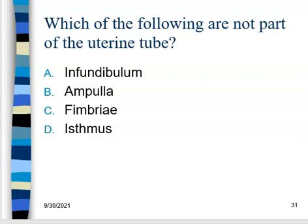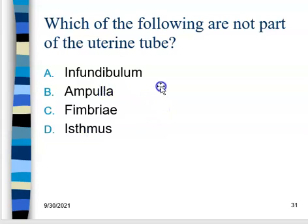Review question: which of the following is not part of the uterine tube? Going out from the uterus, we have the isthmus, then the main portion the ampulla, and then at the end the infundibulum. The fimbriae are the finger-like projections — those are not part of the uterine tube, so that's the answer that doesn't belong.